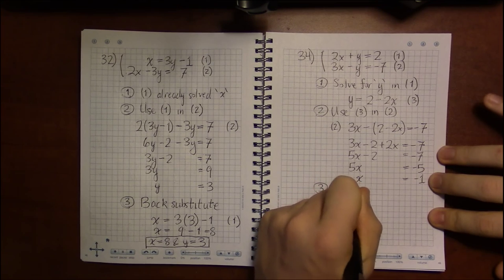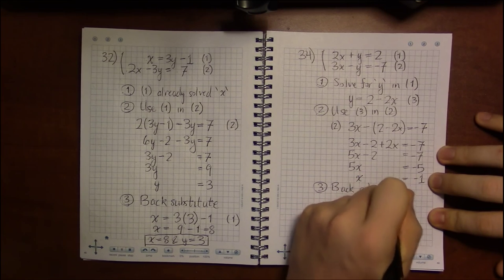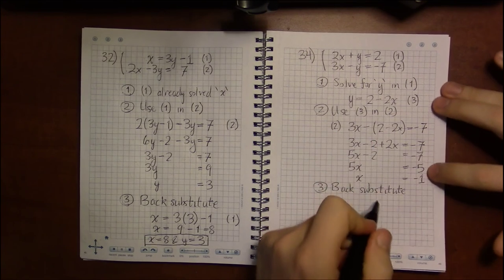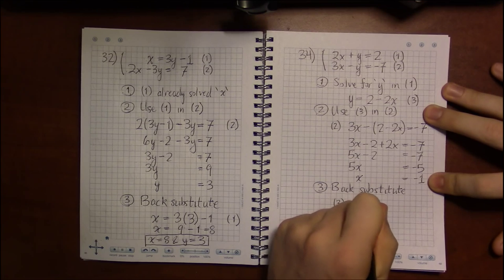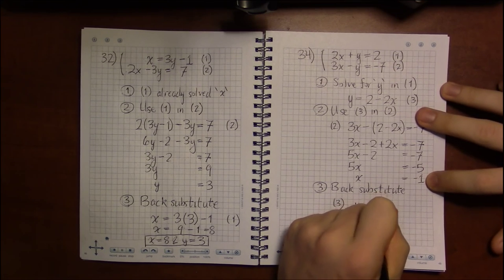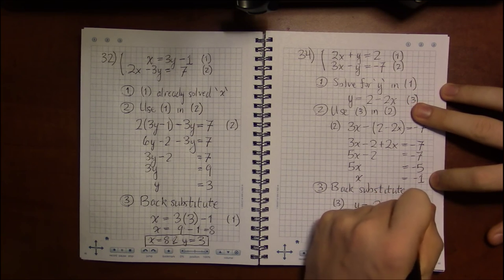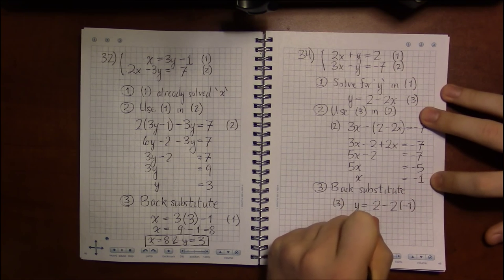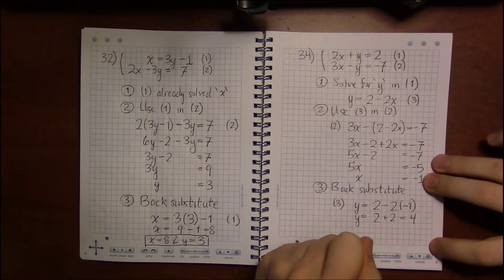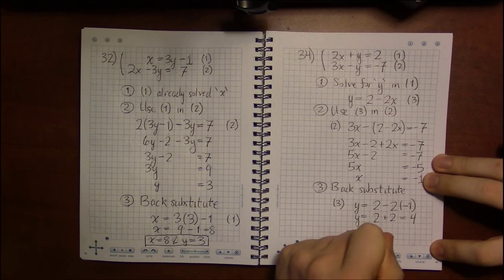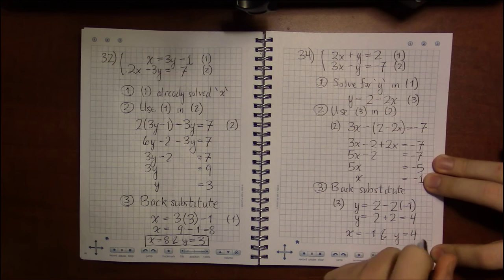Well, we can now use this to find out what y is supposed to be. And let's go ahead and plug that into equation 3, to get that y is now equal to 2 minus 2 times minus 1. So we get y is 2 plus 2, or 4. So our solution to this system is that x equals minus 1 and y equals 4.